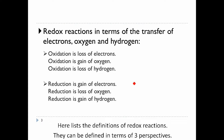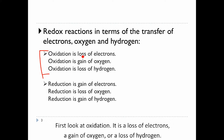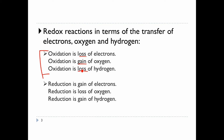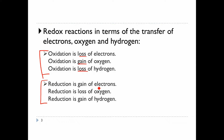Here are the definitions of redox reactions, defined from three perspectives. First, oxidation is a loss of electrons, a gain of oxygen, or a loss of hydrogen. For reduction, it is the opposite: a gain of electrons, a loss of oxygen, or a gain of hydrogen.